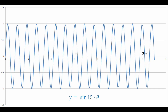Here's another example — you notice there are a lot more crests and troughs than in the previous example. If you count them out you would see there are 15 of them between zero and two pi. The equation graphed is y equals sine of 15 times theta. We say that we have increased the frequency of this particular sine wave.